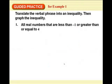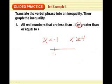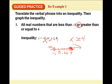All real numbers that are less than negative 1 OR greater than or equal to 4. So the OR tells me I've got to go two different ones. X is less than negative 1. X is greater than or equal to 4. So negative 1, circle it, it goes that way. 0, 1, 2, 3, 4. Circle it, color it in, it goes that way.